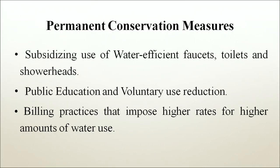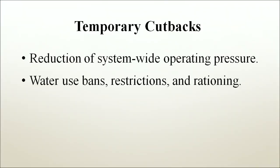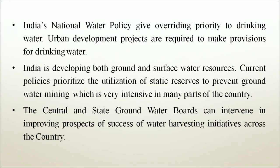Temporary cutbacks or permanent operating adjustments can help to conserve water. Permanent conservation methods include subsidizing use of water-efficient faucets, toilets and shower heads; public education and voluntary use reduction; building practices that impose higher rates for higher amounts of water use; building codes that require water-efficient fixtures or appliances; leak detection surveys and meter testing, repair and replacement; and reduction in use and increase in recycling of industrial water. Temporary cutbacks include reduction of system-wide operating pressure, water use bands, restrictions and rationing.